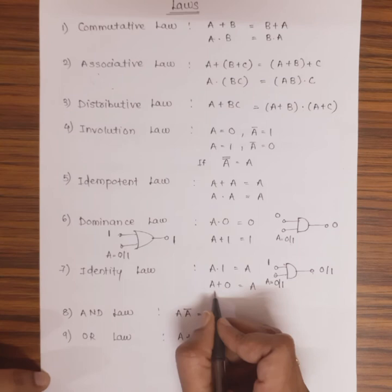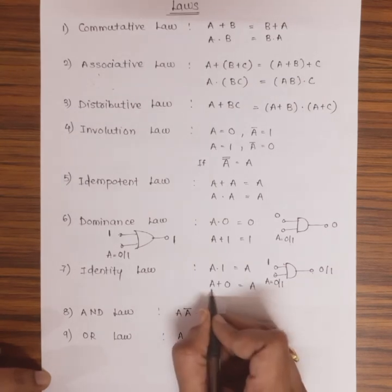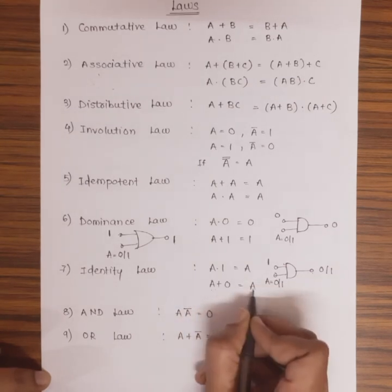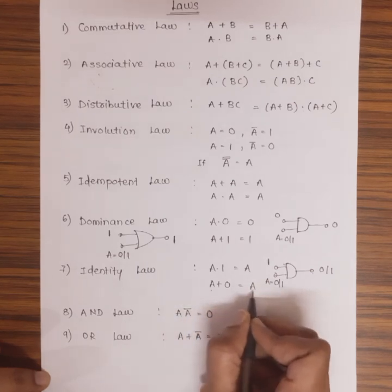With OR law, A + 0 = A. If it is 0, then 0 + 0 output is 0. If it is 1, then 1 + 0 is 1.